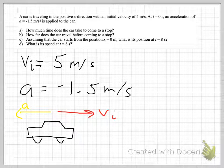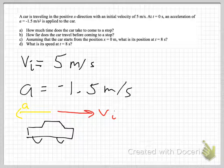In this video, we're going to solve a simple one-dimensional kinematics problem. The problem states: a car is traveling in the positive x direction with an initial velocity of 5 meters per second. At t equals 0 seconds, an acceleration of a equals negative 1.5 meters per second squared is applied to the car.